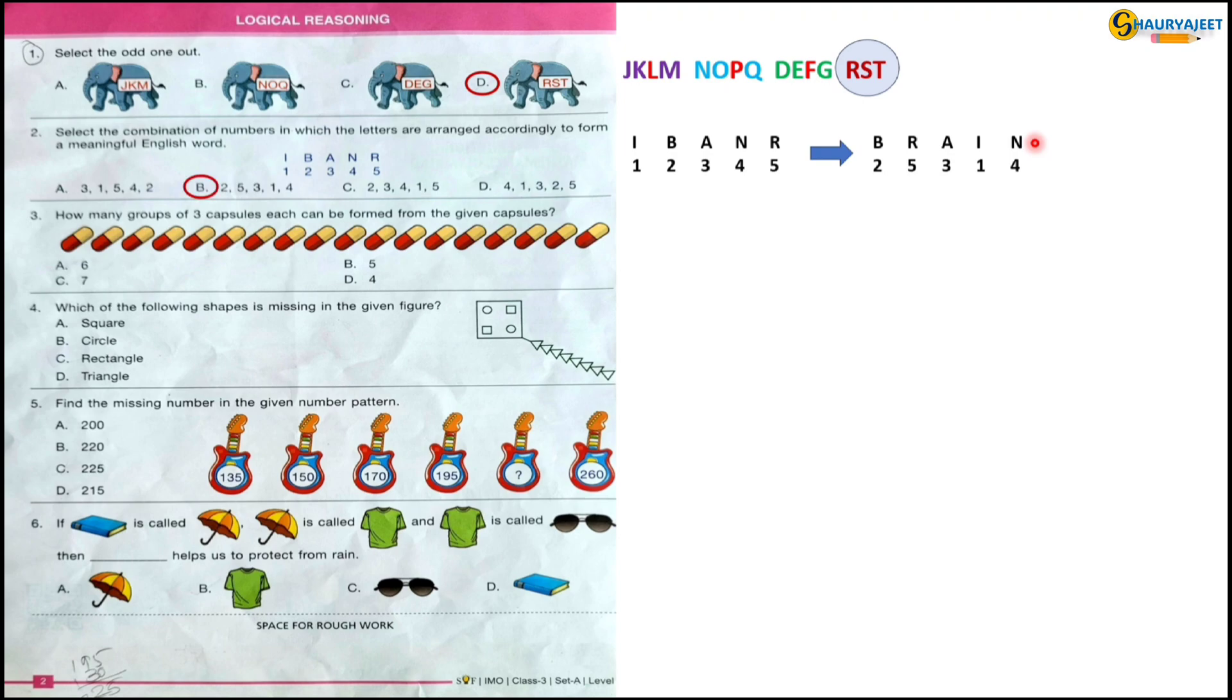Question 3: How many groups of three capsules can be formed from the given capsules? They have given us 18 capsules. So can you tell me what is 18 divided by 3? Yes, it is 6. So the correct option is option A.